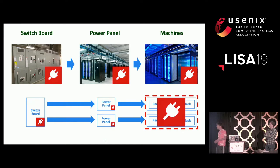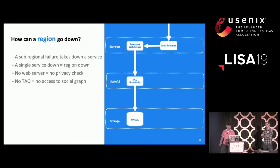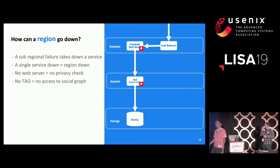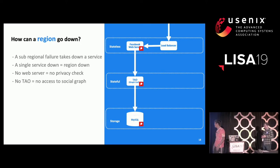Going back to the original question: why would losing 2% of your machines cause the whole region to go down? Let's go back to how we serve a like request. If we lost all of our web servers, no matter how much TAO or MySQL capacity we have, we have no machines to run the business logic — got to drain the region. If we lost TAO instead, no matter how many web servers we have alive, if we have no access to the social graph — got to drain the region. And if we have no MySQL instances available, we can't persist anything to the database, no one can like, comment, or post anything — got to drain the region.